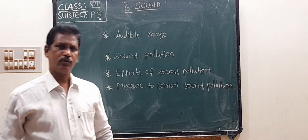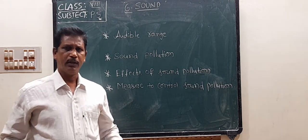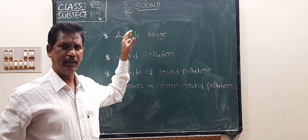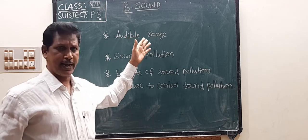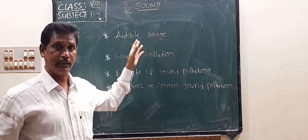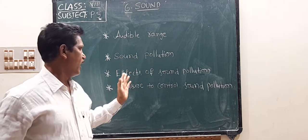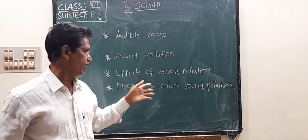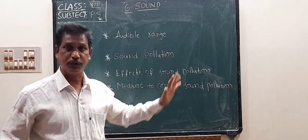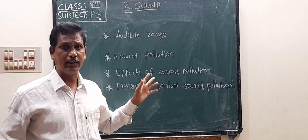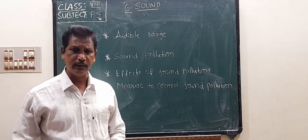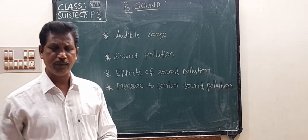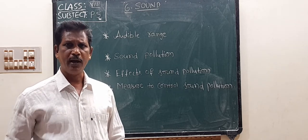Good morning students. Today we discuss the sixth lesson in our science textbook on sound. In this lesson we discuss the audible range of sound, sound pollution, effects of sound pollution, and measures to control sound pollution. All students, take your textbook page number 91. First topic: audible range.